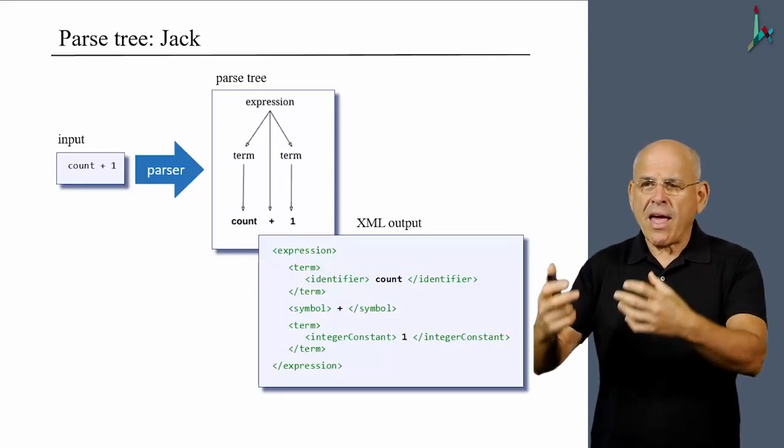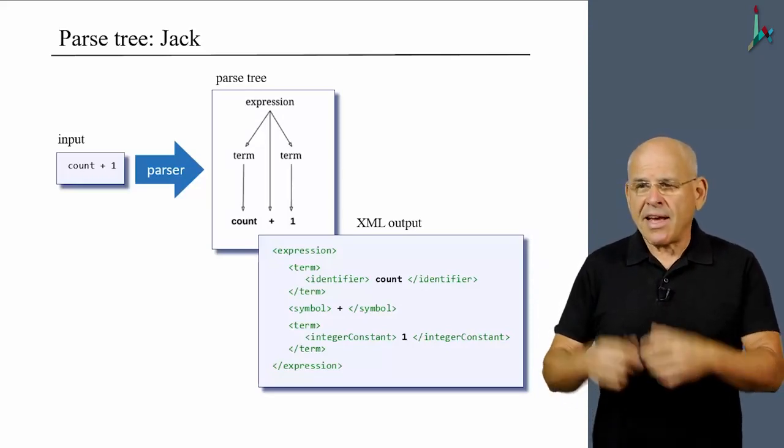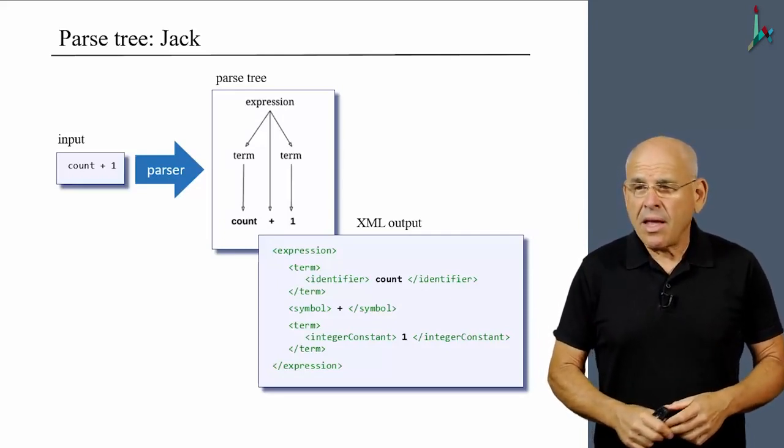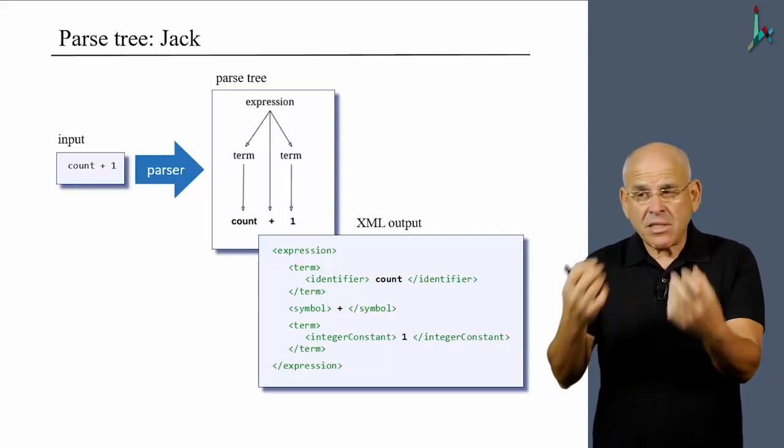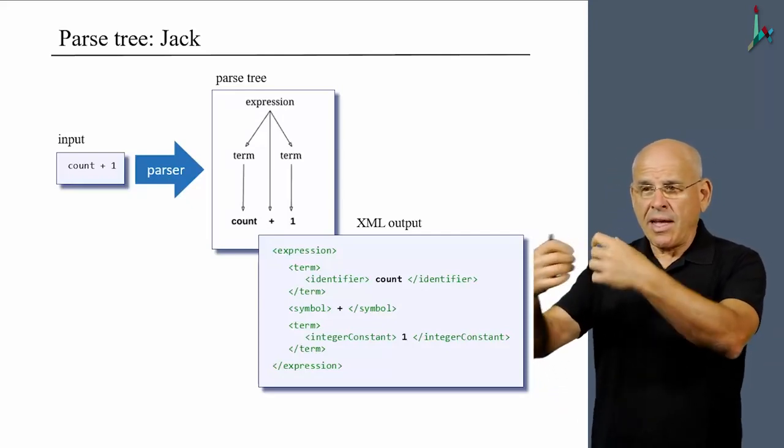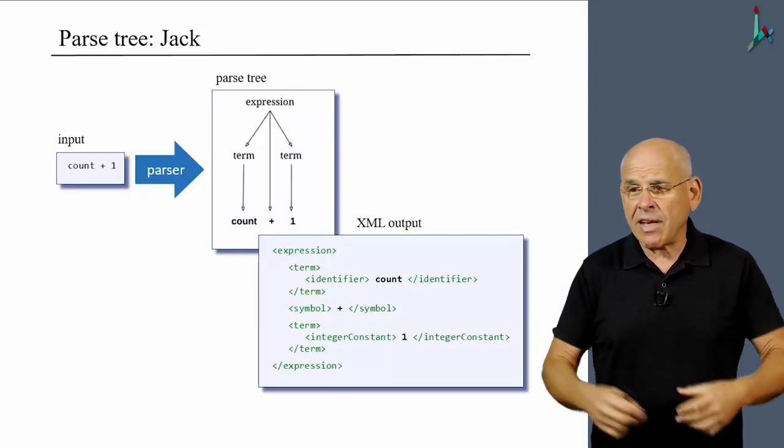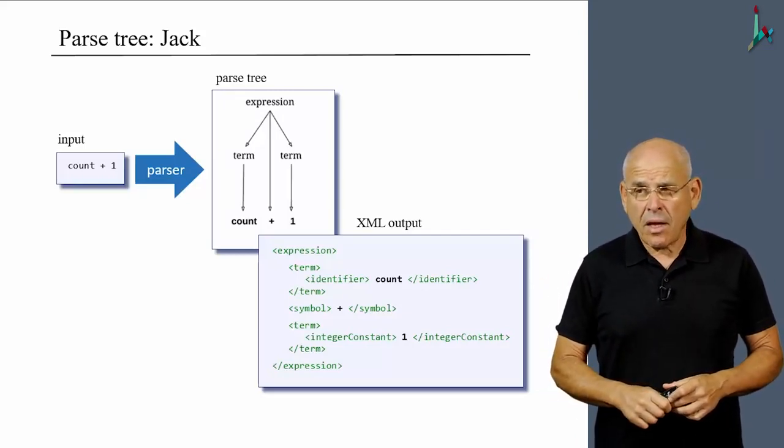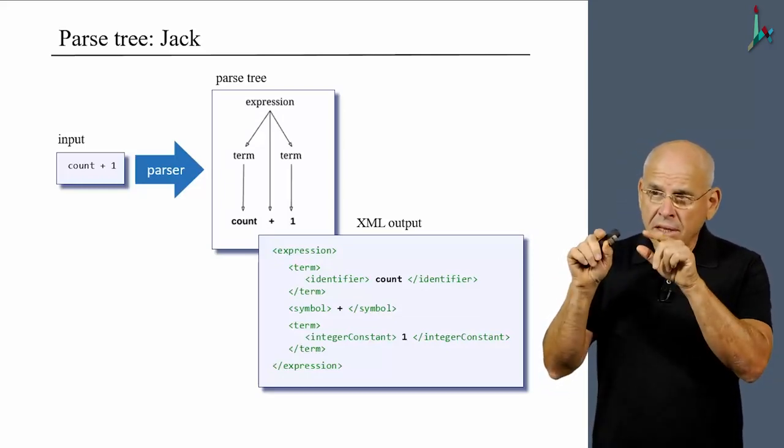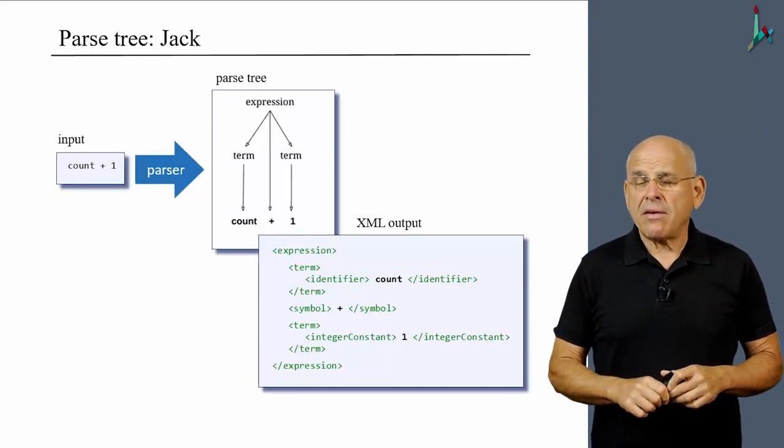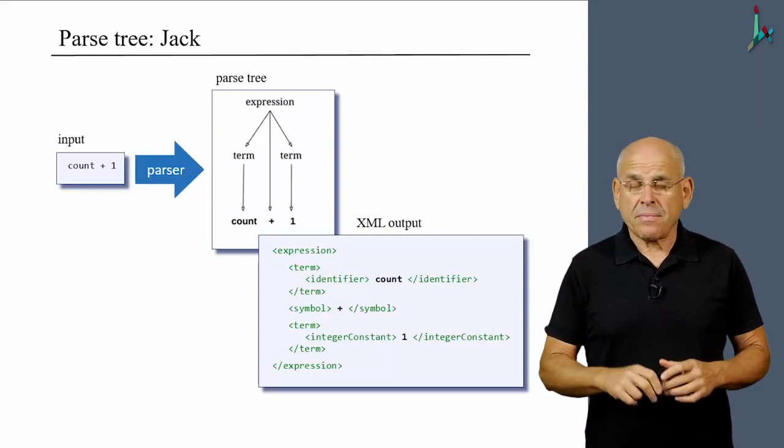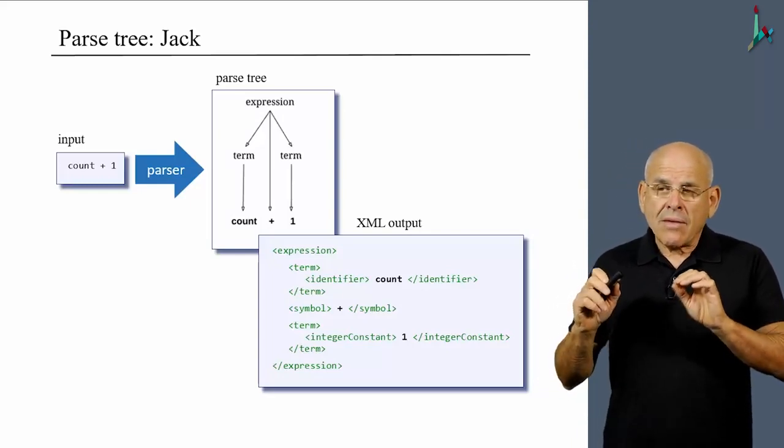We document the fact that we have an expression here. And the expression consists of a term followed by a symbol followed by another term. And the terms in themselves are also made up of lower level structures. The first term consists of an identifier. The second term consists of an integer constant, and so on. So if I want, I can choose to create my parse tree using this format that we have here, some agreed upon XML text.